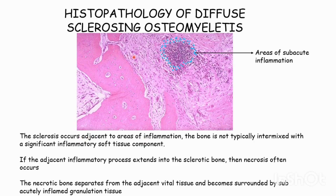If the adjacent inflammatory process extends into the sclerotic bone, then necrosis occurs. The necrotic bone separates the adjacent vital tissue and becomes surrounded by sub-acutely inflamed granulation tissue.